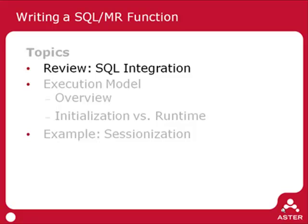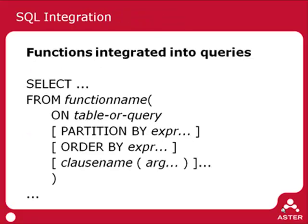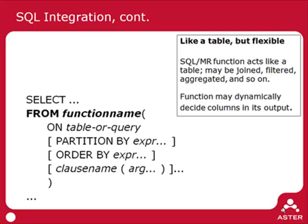First, I'll talk about SQLMR and how it integrates with SQL, just to review. SQLMR functions are essentially integrated into queries and they act like a table. A SQLMR function acts like a table — it can be joined, filtered, aggregated, and so on. Here I'm showing a select from the function, but one could also join this to another table, have a filter like a where clause, and so on. We talked about this earlier in the series.